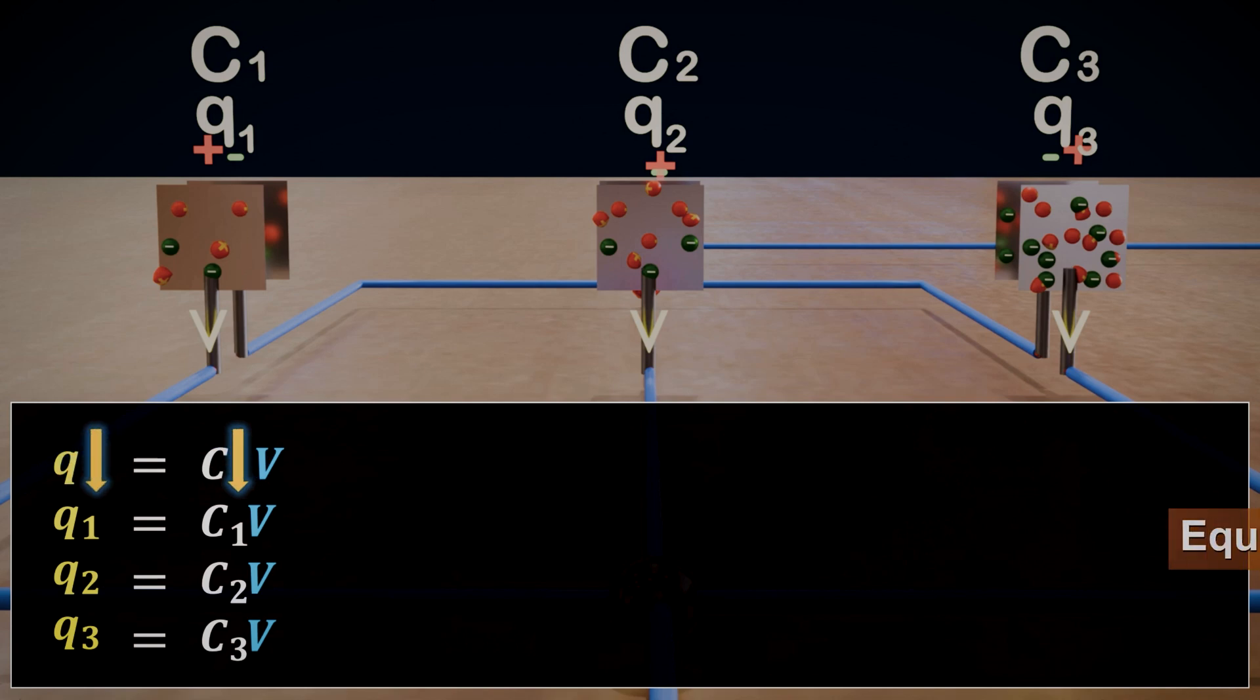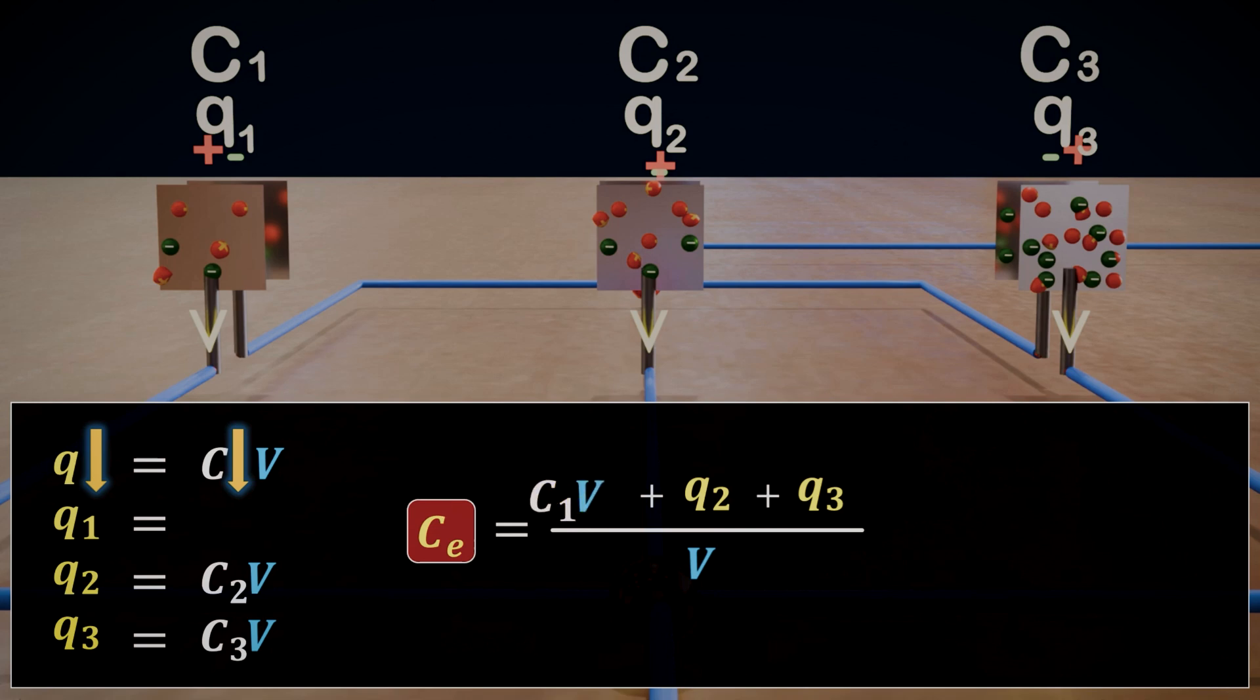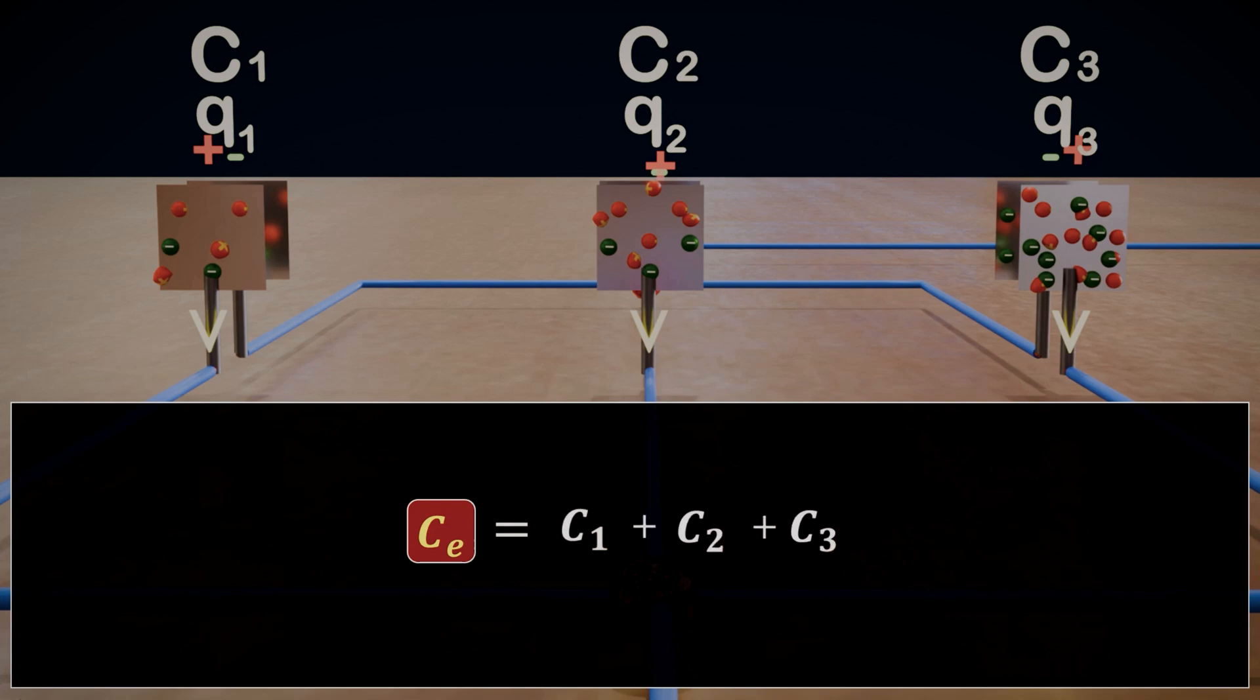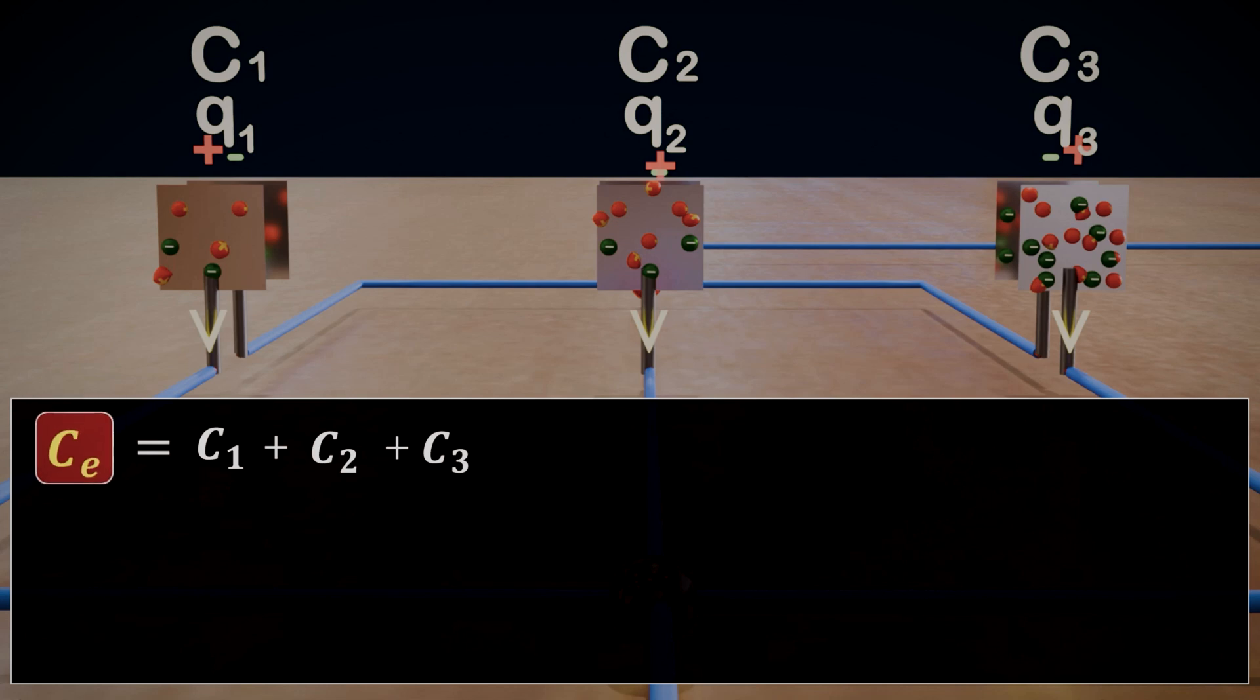But how do we find the equivalent capacitance of this parallel combination? The equivalent capacitance is the total amount of charge divided by the total voltage. Since the voltage is the same across all capacitors, we just add up the charges stored in each one. So, the total charge in the system is simply the sum of the individual charges, Q1 plus Q2 plus Q3. And since voltage is the same across each capacitor, it cancels out when we calculate the equivalent capacitance. What do we get? The equivalent capacitance, CE, is equal to C1 plus C2 plus C3, and so on, if you have more capacitors connected in parallel. This is huge! The equivalent capacitance is the sum of all the individual capacitances.